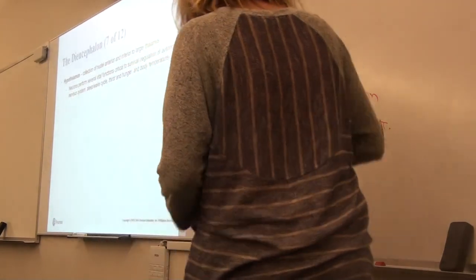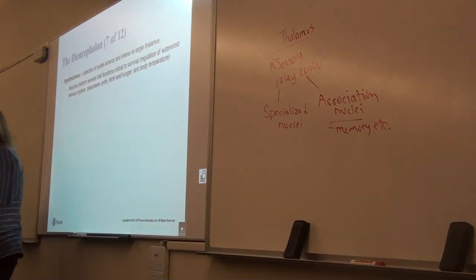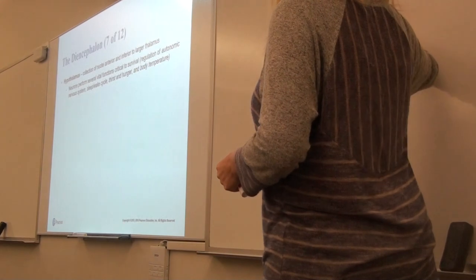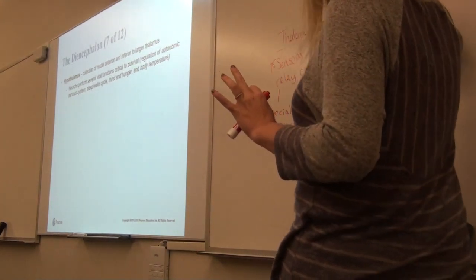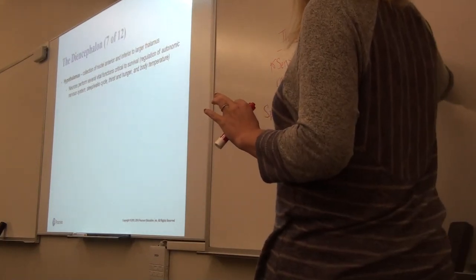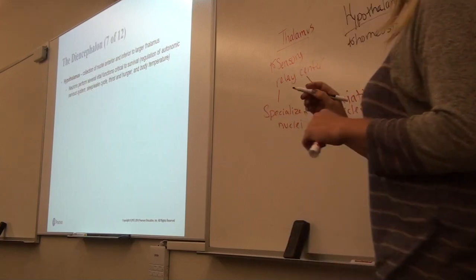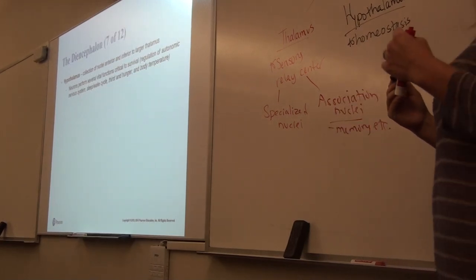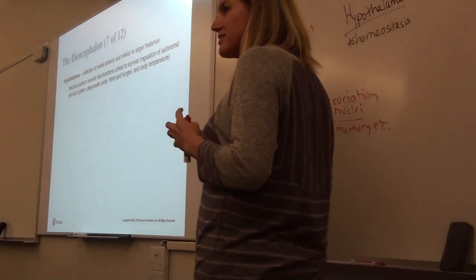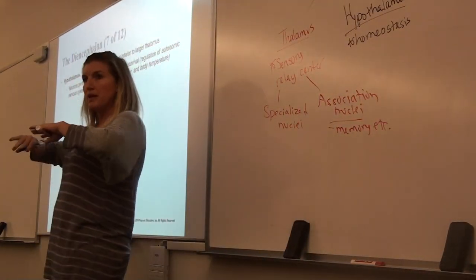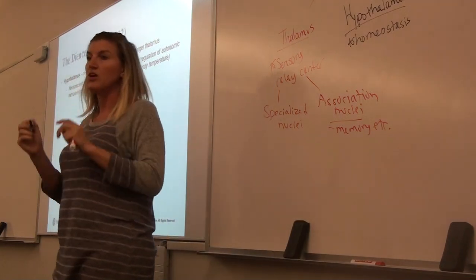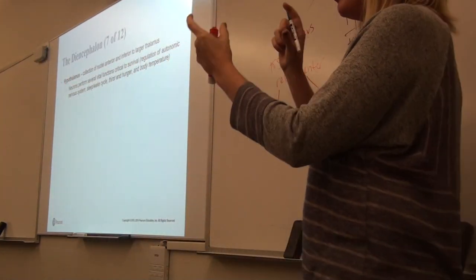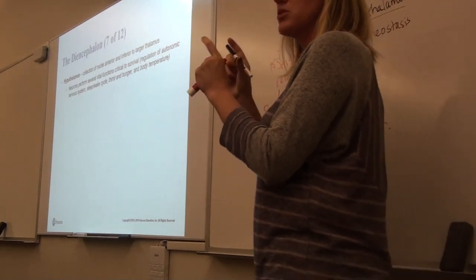The hypothalamus is also part of our diencephalon. Our hypothalamus is our major homeostasis center. When you think hypothalamus, think homeostasis. This is where our blood sugar is monitored, our body temperature is monitored, our hormone levels are monitored — a lot of those basic things that need to be maintained are regulated here. This includes our sleep-wake cycle. It's also a key player between our endocrine system and our nervous system, playing an integral role allowing the two systems to communicate together.